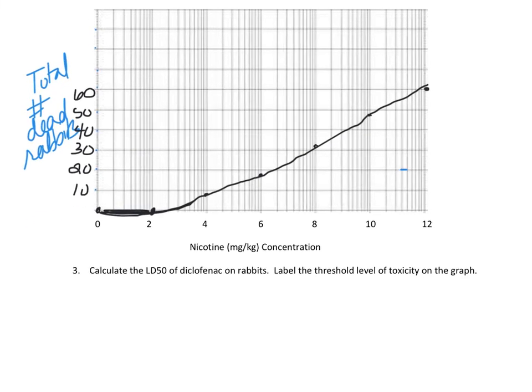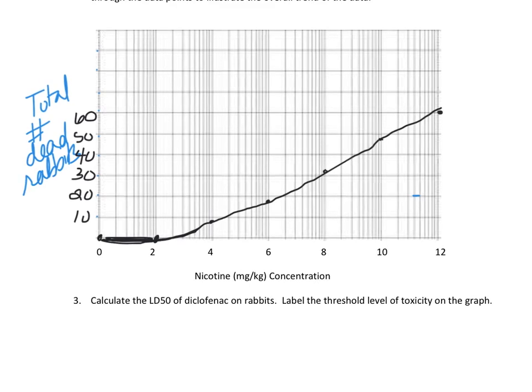Number three says to calculate the LD50 of diclofenac on rabbits. Here's a common mistake: students see 'LD50' and think to draw a line from 50 on the y-axis over and drop it down. That is wrong because this is the total number of dead rabbits, not a percentage. The total is 60, so we want half of 60, which is 30. So draw a line from 30 over until it hits the curve, then drop it down.